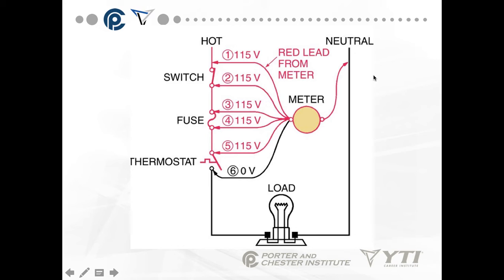Between 5 and neutral I have 115 volts. Now at 6 and neutral I have 0 volts. My next step would be to move this lead from neutral and put it on point 5. My voltage across that open switch would be 115 volts.